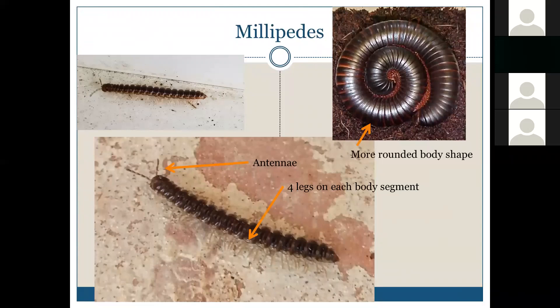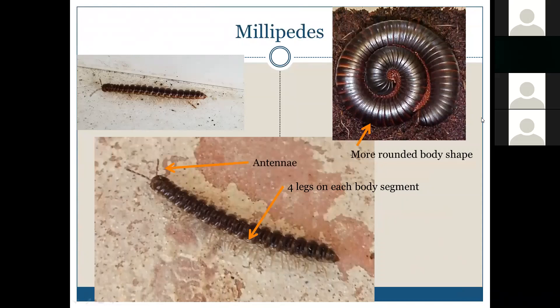Millipedes are typically going to be found in an outside environment, which is where they're supposed to be. But they will move indoors when it gets cold, very wet, or hot and dry outside. They will work their way into structures and usually end up dying because they don't have enough moisture to survive indoors. When people come across them inside, they're often curled up in a spiral shape, because that's what happens when they die or when they're disturbed.